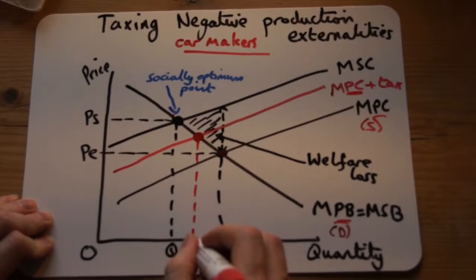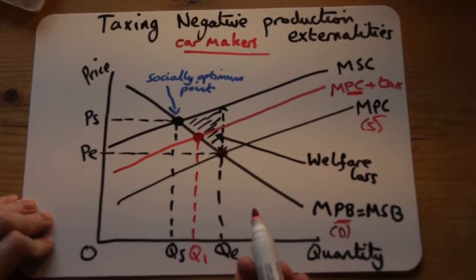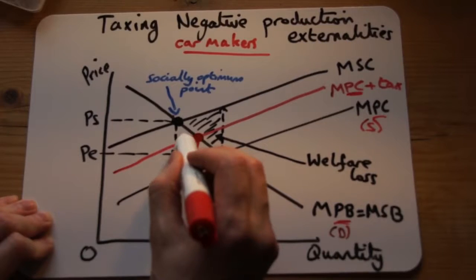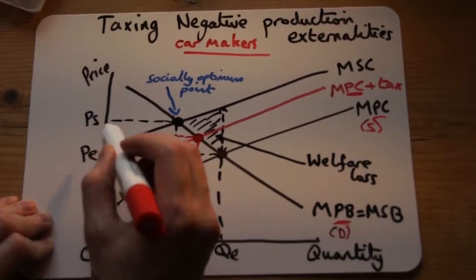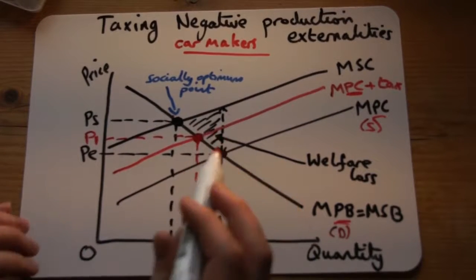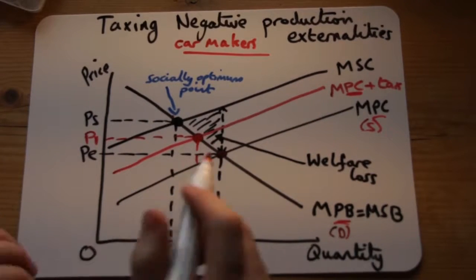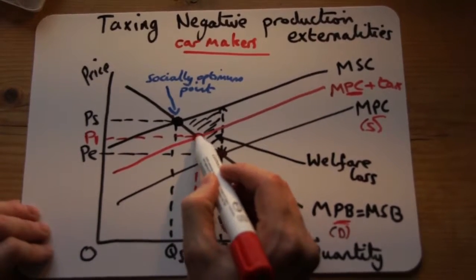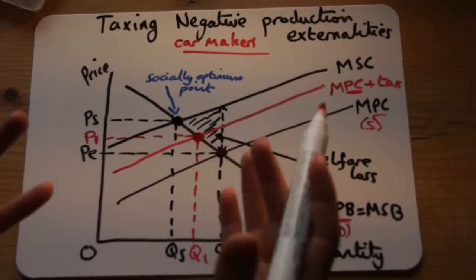So with the tax, we're actually producing a little bit less, and obviously the price has gone up because the tax has been put on there, and now that is the new price. But the next thing we need to do is say, okay, we found the new point, but actually where is the tax?